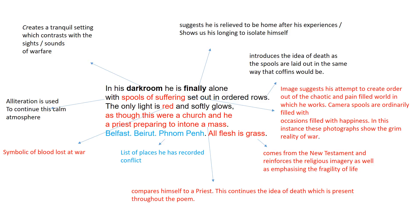Starting with the first line: 'In his dark room he is finally alone' — the word choice of 'dark room' creates a tranquil setting which contrasts with the sights and sounds of warfare the photographer would have been used to. 'Finally' suggests he's relieved to be home after his experiences, showing his longing to isolate himself. 'Spools of suffering set out in ordered rows' suggests he's trying to create order out of a chaotic, pain-filled world.